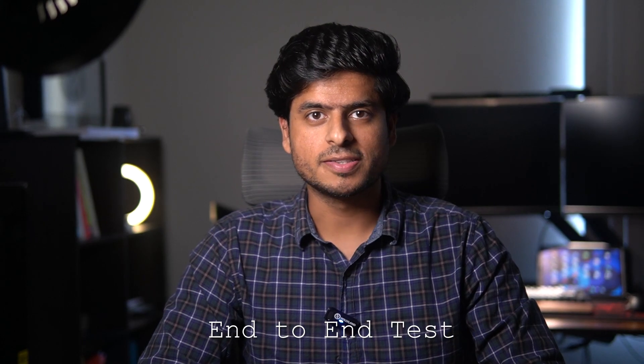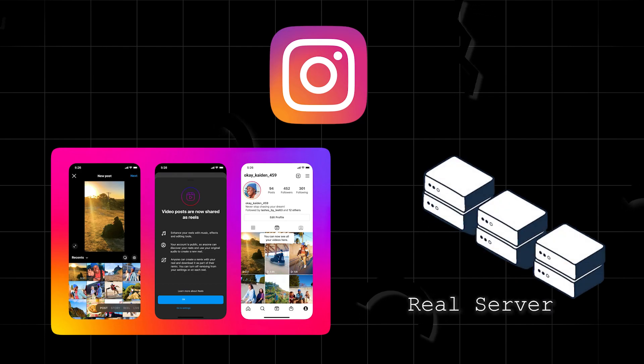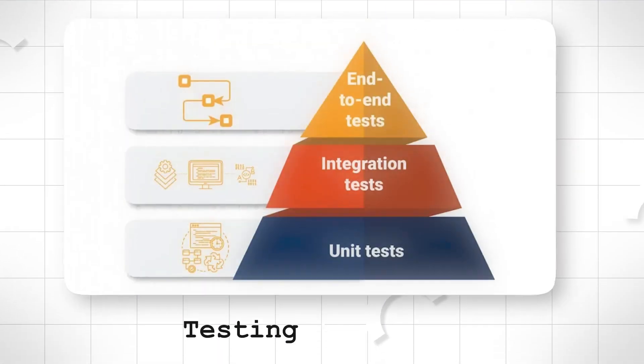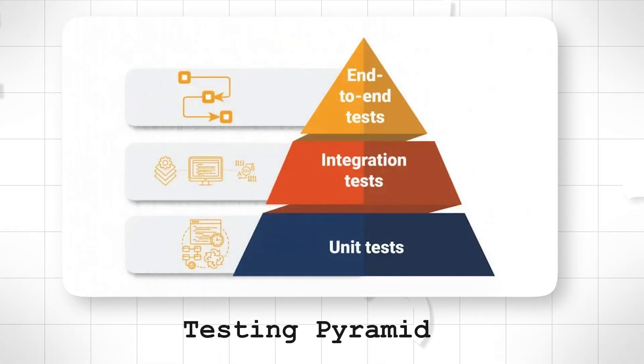The next type is end-to-end tests. These are tests that effectively test the entire user journey as if an automated user was a real user. For Instagram, posting a new reel with a real server can be regarded as a true end-to-end test. Organizations have recognized the importance of the testing pyramid, where unit tests are the biggest in number, followed by integration tests, and followed by a smaller number of end-to-end tests.